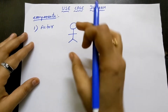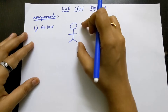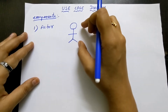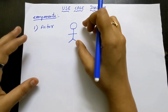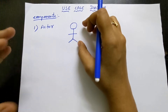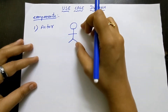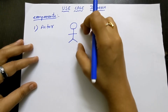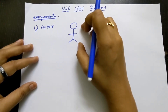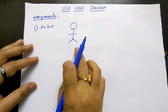An actor does not have to be a real person only. It can be a group of people or it can be a system. So this is the first component.